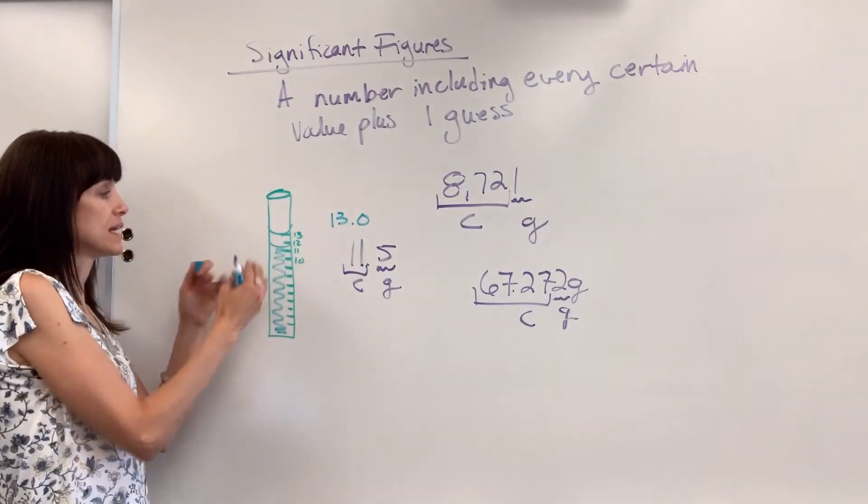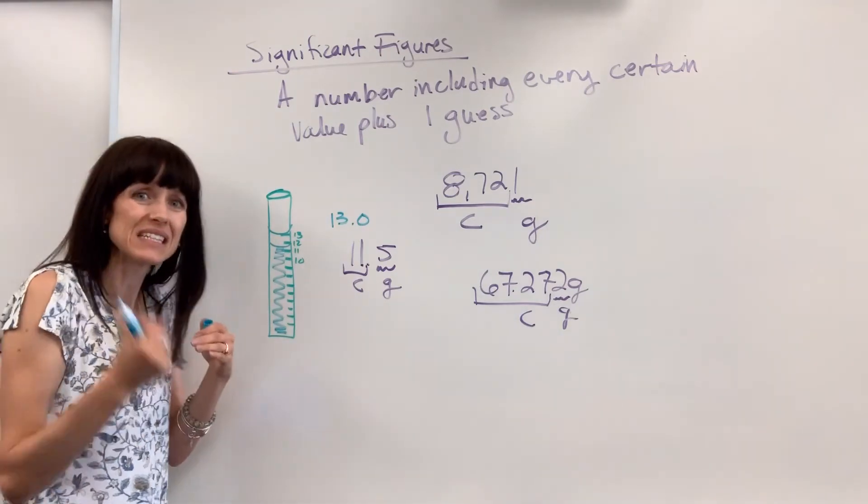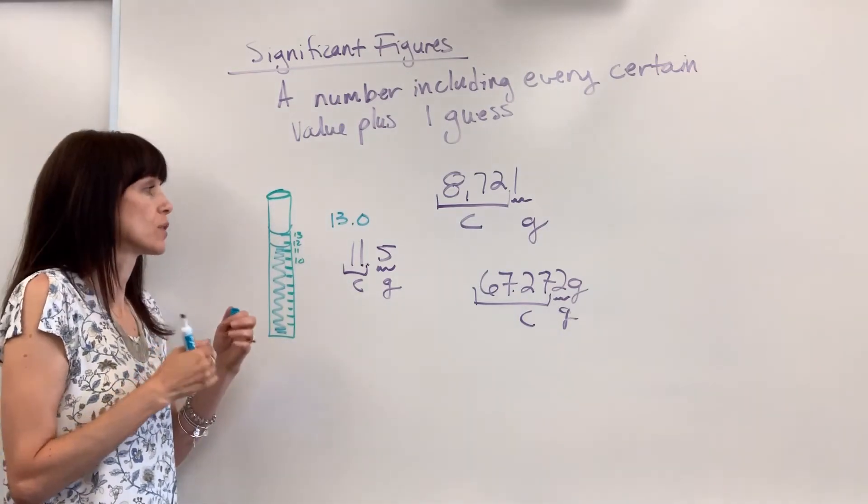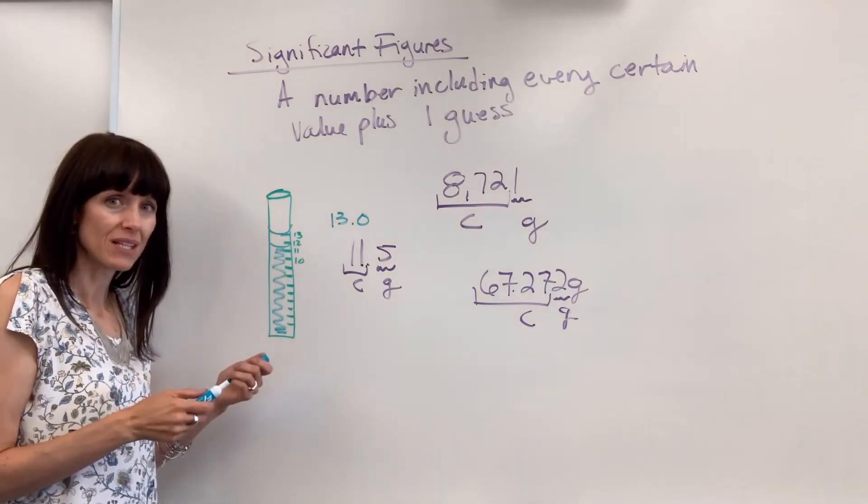If the meniscus hits right on a tick mark, they forget they still have to make a guess. You have to go one more decimal place to make that guess. So there you have significant figures.